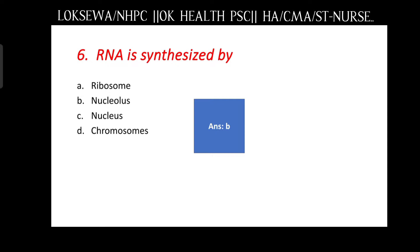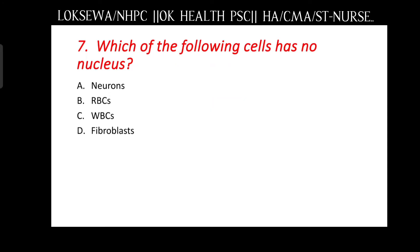Okay, next, question number seven: which of the following cells has no nucleus? Neurons, RBCs, WBCs, or fibroblasts? The answer is B, RBCs. RBCs have no nucleus.